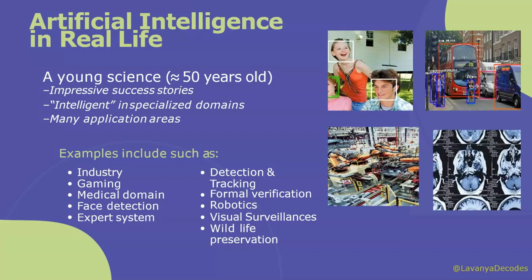Next is artificial intelligence in real life. Basically it is a young science, approximately 50 years old, that has impressive success stories — intelligence in specialized domains or particular areas. There are many applications in industry, gaming, the medical domain, face detection, expert systems, object detection and tracking, whether it is bus, car, or human beings, formal verification, and robotics used in healthcare systems, visual surveillance, and to preserve wildlife animals.